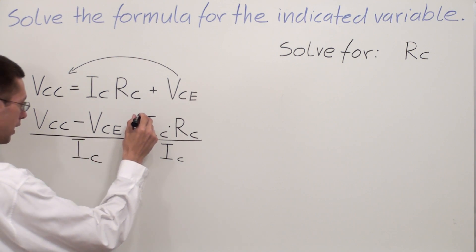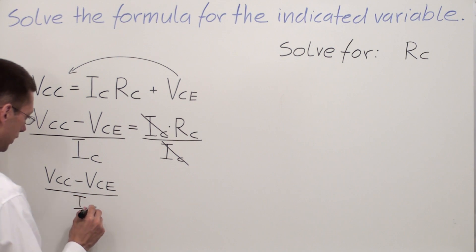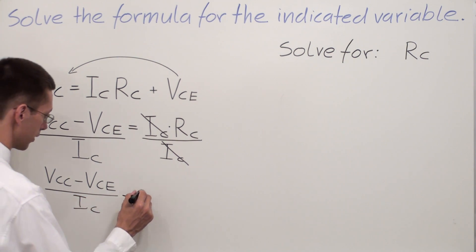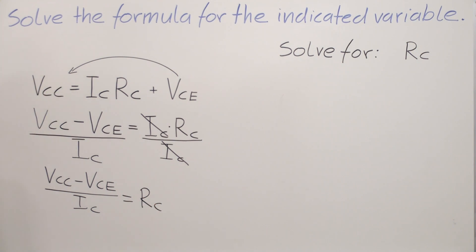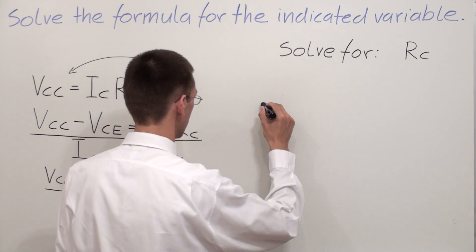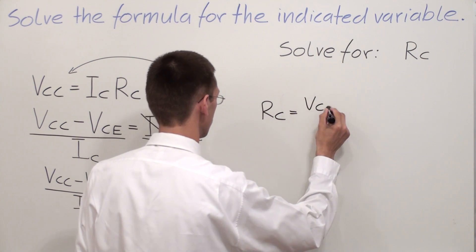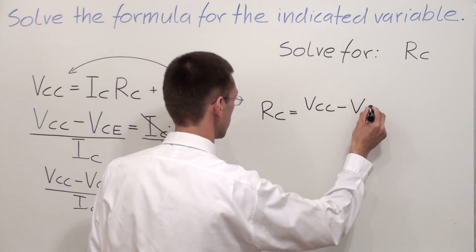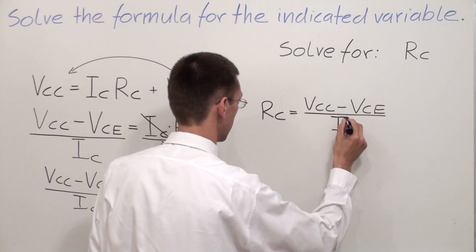And IC and IC will cancel out, and I'm going to end up with VCC minus VCE over IC equals RC. We can rewrite this formula and say RC equals VCC minus VCE over IC.